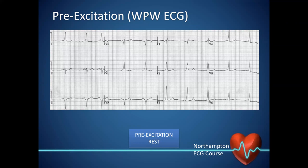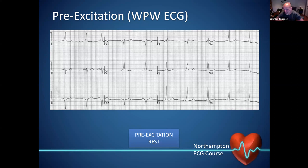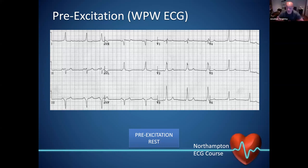Regarding Type A versus Type B WPW — you can distinguish them on the ECG, but to be absolutely frank it's completely irrelevant. As soon as you get into the EP study, you work out exactly where it is. So it doesn't add anything clinically. If you've got pre-excitation and the patient is under the age of 40, from a prognostic point of view they should have an EP study to assess any excess risk. Over 40 with no symptoms, you can make a case for not doing an EP study since you're not altering mortality.